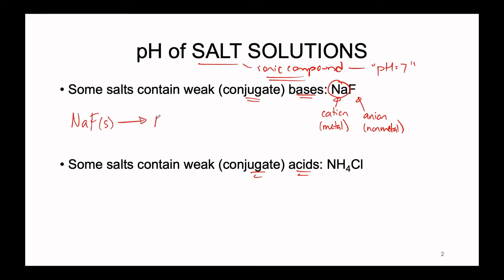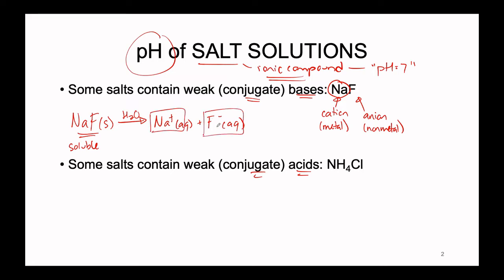Sodium fluoride when introduced into water is going to break into sodium plus aqueous and fluoride minus aqueous. This should not be too surprising — if we take a soluble ionic compound and drop it into water, it breaks up into two different ions. We're going to inspect these two ions in solution because this is where the potential pH change is going to come in. The question we have to ask is: are either of these ions weak or conjugate acids or bases onto themselves? Is there a way for Na+ or F- to interact with water to generate some H+ or OH-?